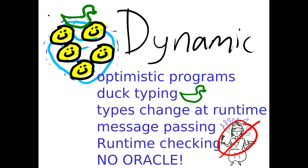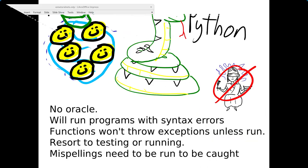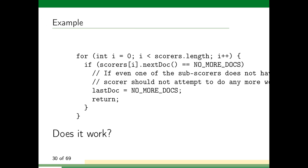Dynamically typed languages typically are optimistic programs. They're meant to work. They use duct taping. Types can change at runtime. They engage in lots of kinds of behavior. But typically they don't have oracles. For instance, in the case of Python, there is no oracle. You can't actually ask Python 'is this a Python program?' It'll try to run it, and if it doesn't hit any misspellings and doesn't hit any functions that you have syntax errors in, it'll be just fine.